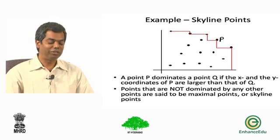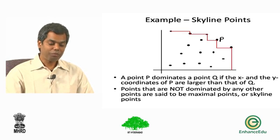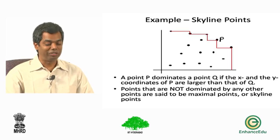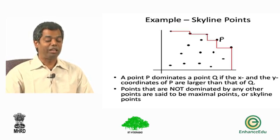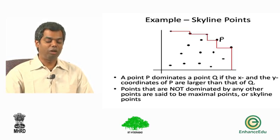As this example shows, there is this point P shown here and it will dominate several other points in this example. Now what are these skyline points? These are simply the points that are not dominated by any other point in the data set.